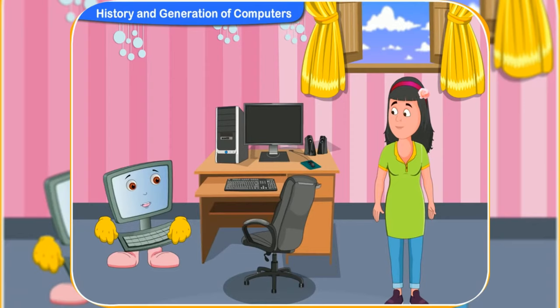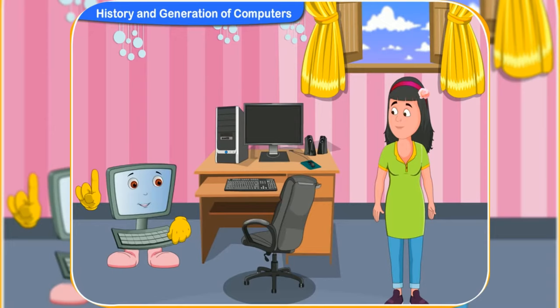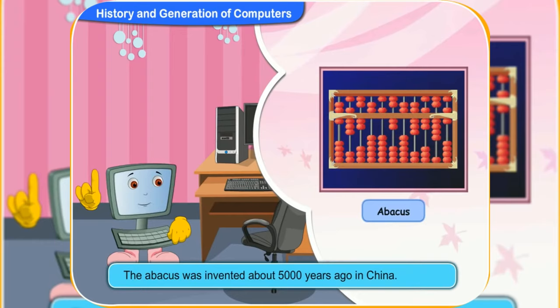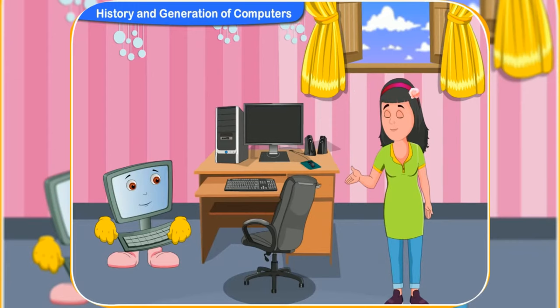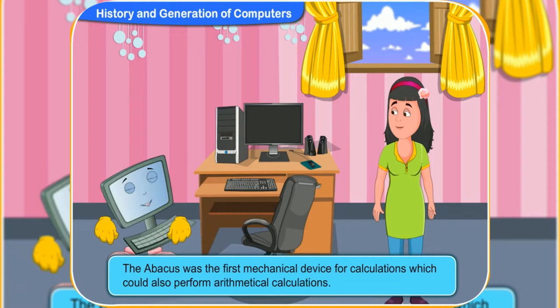To know about the history of computers, we have to go back to the days when people used the abacus to calculate complex sums. The abacus — do you mean the abacus we used during our kindergarten days? Yes, the instrument you used to calculate sums during the first days at school. The abacus is probably the first counting device. It was invented about 5000 years ago in China. The abacus was the first mechanical device for calculation, which could also perform arithmetical calculations.